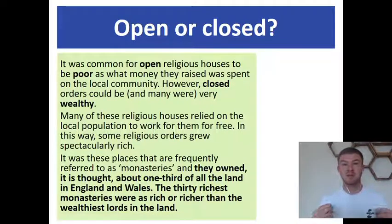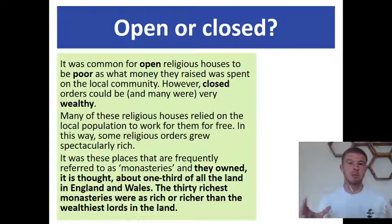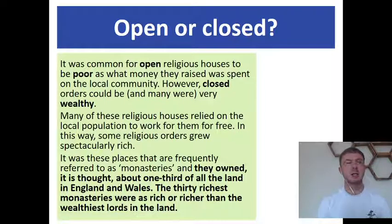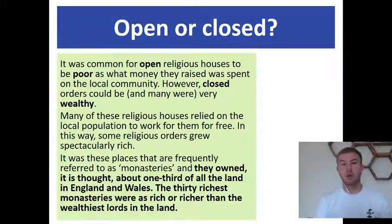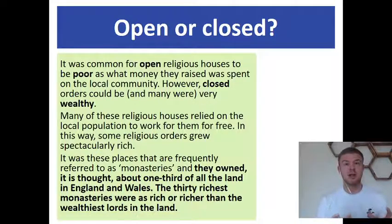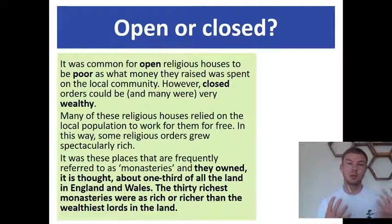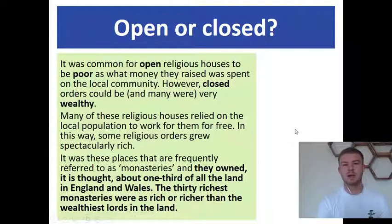The closed orders became very, very rich. They weren't paying anybody to work for them — they had volunteers — and they were still receiving money because people wanted to give to the church, so they became very wealthy without providing a service. These places owned about one third of all the land in England and Wales. In fact, the 30 richest monasteries were as rich or richer than the wealthiest lords in the land. If you think back to our lesson on Henry VIII — a very jealous man — and Thomas Cromwell whispering in his ear that he should be more powerful than the church, he would be worried about how rich and powerful the Catholic Church had become.